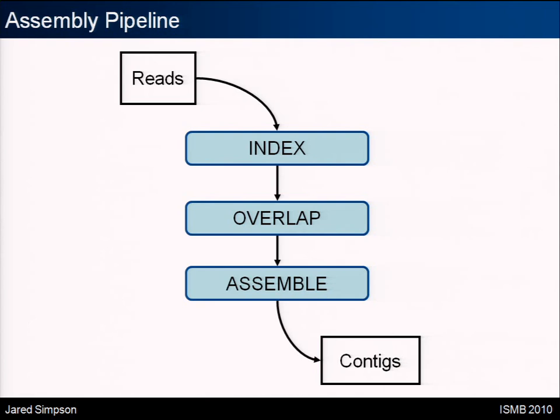So as an assembler for real data, the pipeline has these steps: first build the BWT and FM index, then compute all overlaps to build the string graph, and then assemble the reads — which is just looking for unbranched segments of the graph and bringing them together to produce contigs.